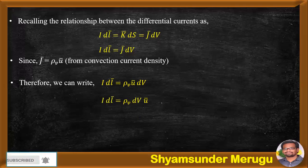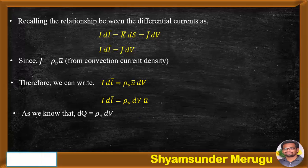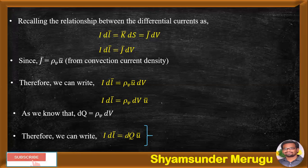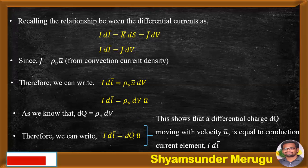Rearranging the terms, we get IdL bar equals ρV dV U bar. And we know that the differential charge related to volume charge density ρV is dQ equals ρV dV. Therefore, we can write IdL bar equals dQ U bar. This shows that a differential charge dQ moving with velocity U bar is equal to the conduction current element IdL bar.